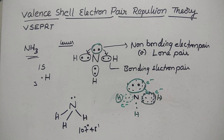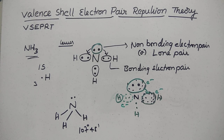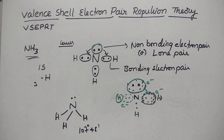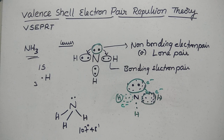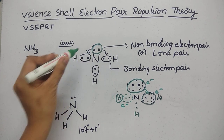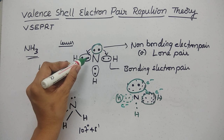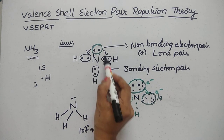VSEPR theory explains how bond angles change through the concept of lone pair repulsion. The lone pair, or non-bonding electron pair, is attracted by only one nucleus, whereas a bond pair is shared between two atoms. As the angle between a lone pair and a bond pair increases, bond angle distortion occurs.